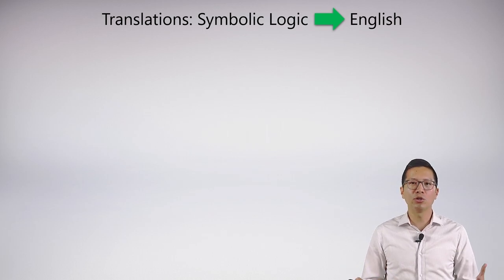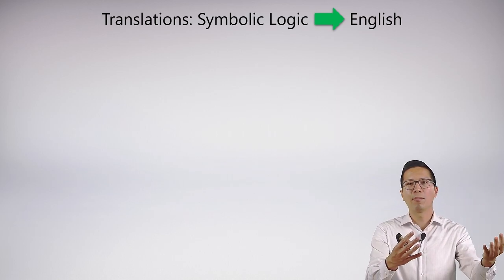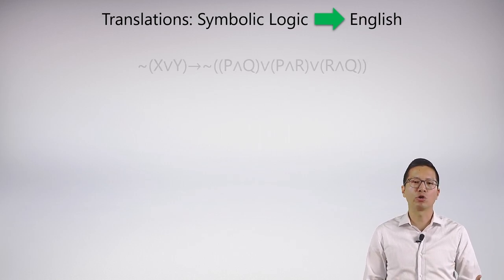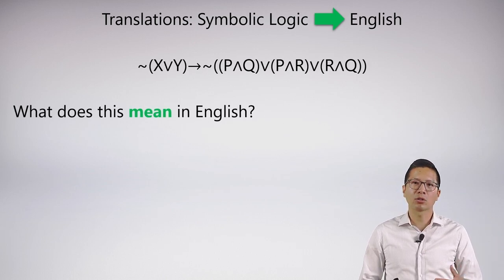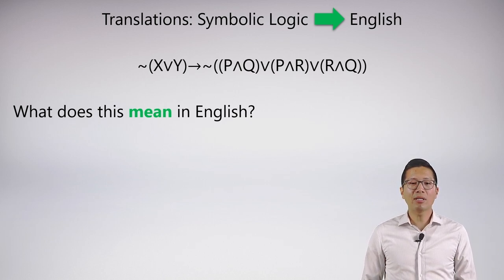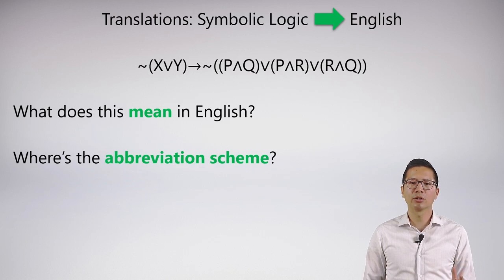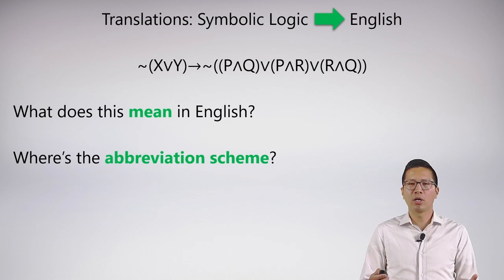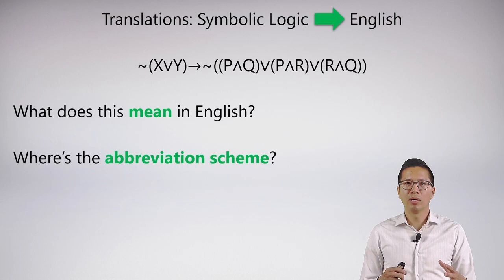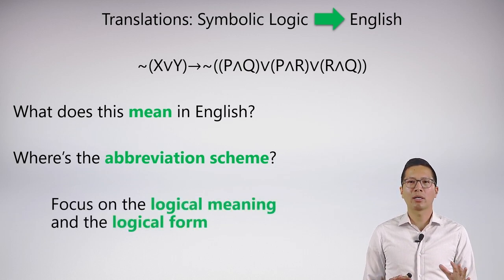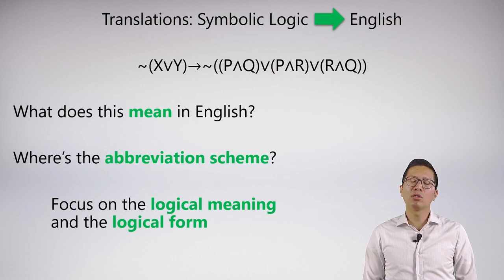We've really reinforced symbolization and the syntax of sentential logic, focused on taking English phrases into logic. But we can also do the opposite — take logical sentences and convert them back into English, because translation knowledge should go both ways. Here's an example sentence. You should object immediately: I haven't given you the abbreviation scheme, so we can't translate it fully. But I actually think the abbreviation scheme clouds what I really want you to take away, which is that we can look at a statement in pure abstract symbolic logic and extract a logical meaning from it.